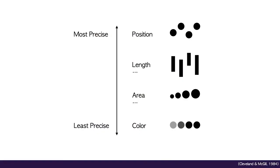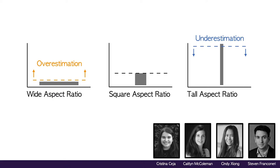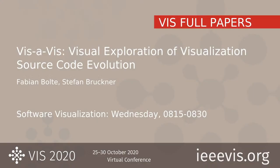Position is believed to be the most precise encoding channel, but our perception and memory of it can still be biased. Past work has shown that the vertical position of bars in a bar chart is recalled in a biased manner, illustrating both underestimation and overestimation. Here we find that the aspect ratios of bar marks can cause this position bias — specifically resulting in overestimation for bars with wide ratios and underestimation for bars with tall ratios.